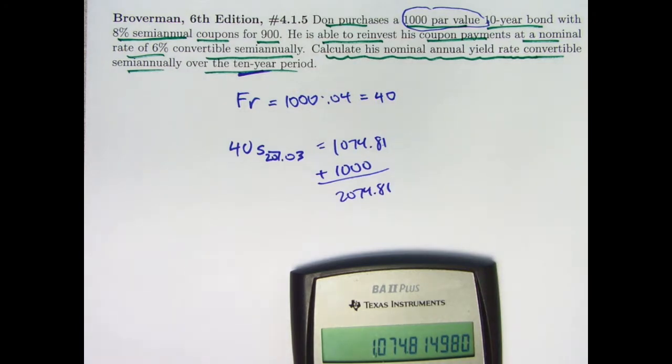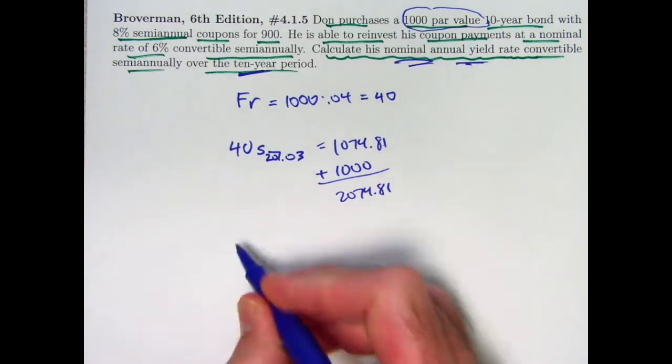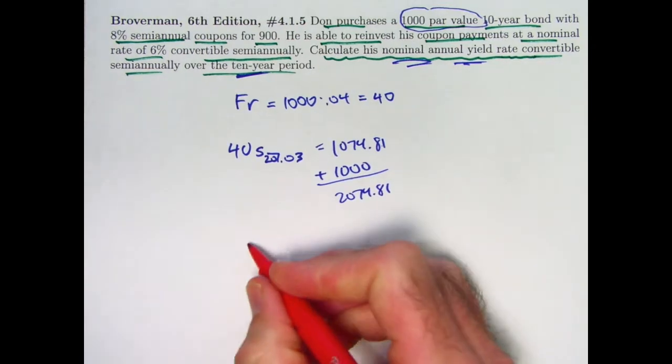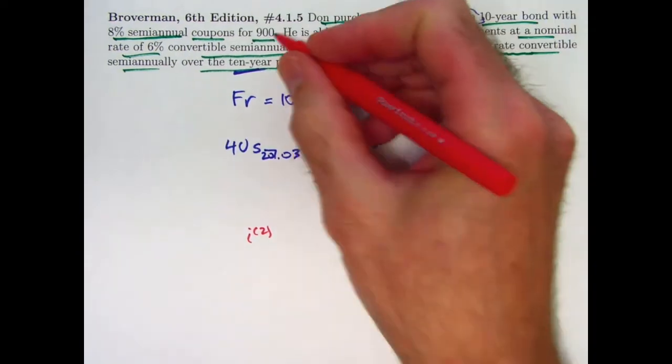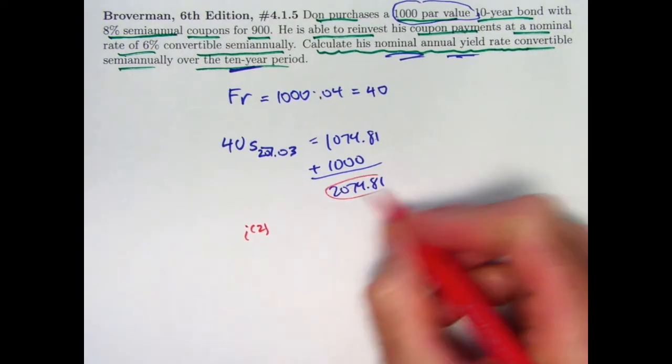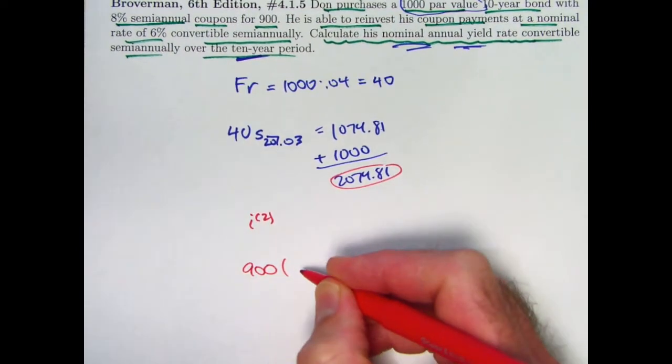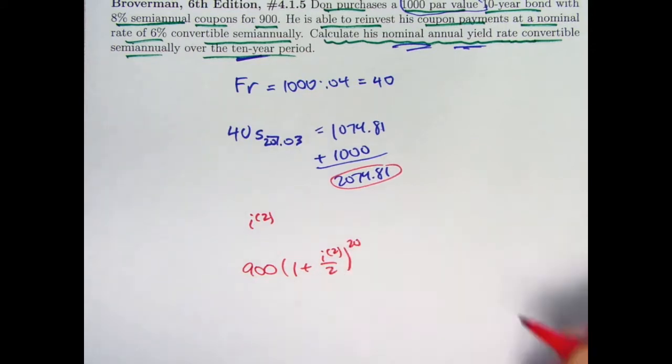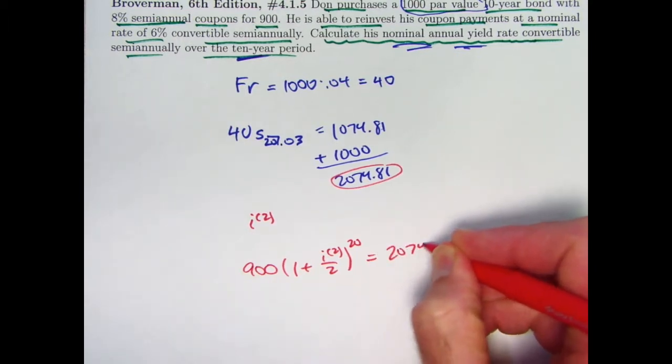So we want to find what nominal annual yield rate, call it I2, will cause our original 900 investments to grow to this amount after 10 years. So we want to solve the equation 900 times 1 plus I2 over 2 to the 20th power, 10 years. This is convertible semi-annually, will equal 2074.81.